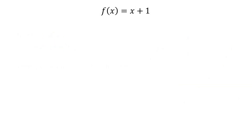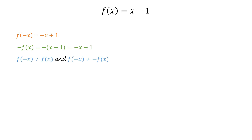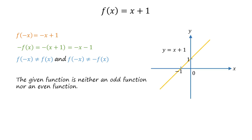Now consider the function f of x equals x plus 1. Pause this video and try to figure out whether the given function is even, odd, or neither. First, we determine f of negative x, which equals negative x plus 1. Now, negative of f of x equals negative of (x plus 1), which equals negative x minus 1. Clearly, f of negative x neither equals f of x, nor does it equal negative of f of x. Therefore, the given function is neither even nor odd. It can be seen that the graph of this function is neither symmetric about the y-axis, nor symmetric about the origin.